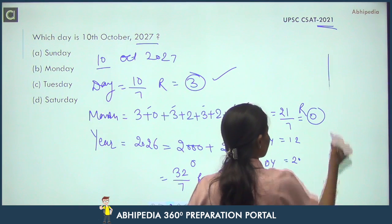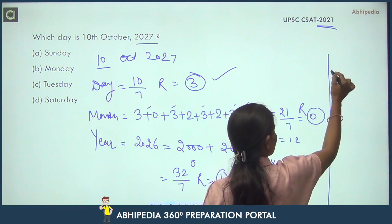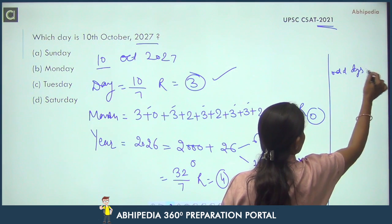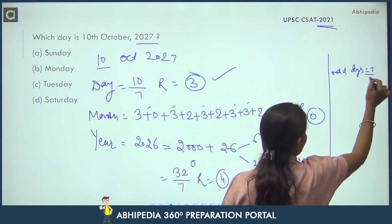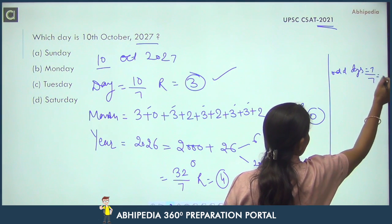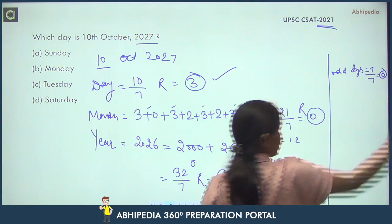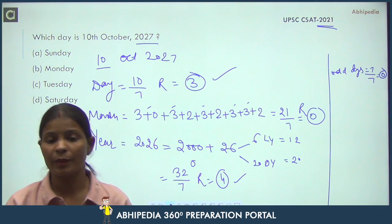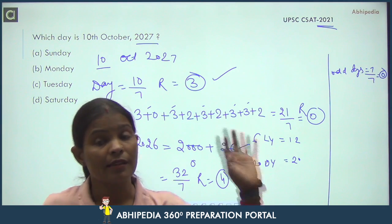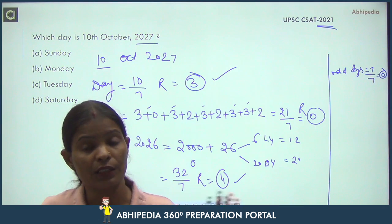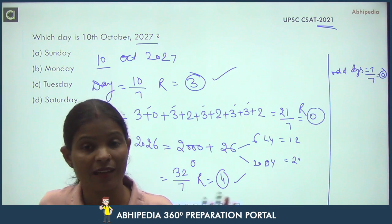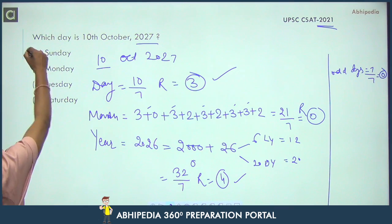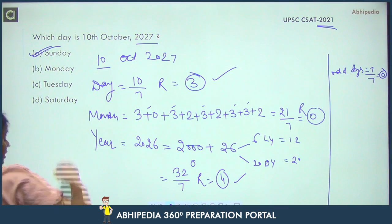Total odd days: 3 (date) + 0 (months) + 4 (year) = 7. Divide 7 by 7 = remainder 0. And 0 represents Sunday. So 10th October 2027 is Sunday.